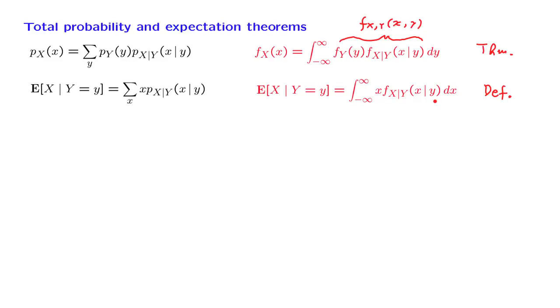Finally, we have the total expectation theorem in the discrete case. And there is the obvious analog in the continuous case where we are using an integral and a density. The interpretation is that we consider all possibilities for y.